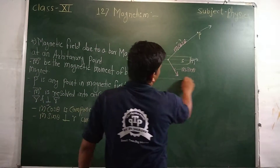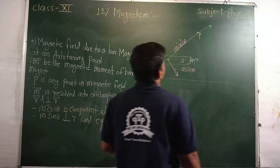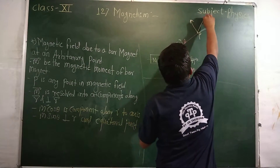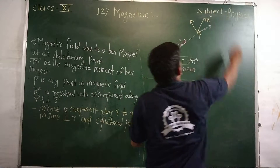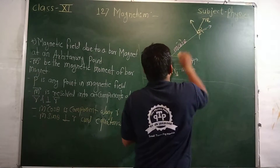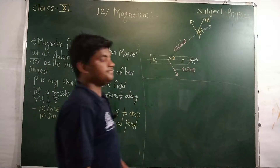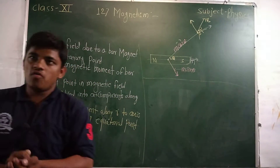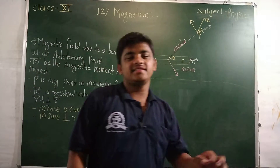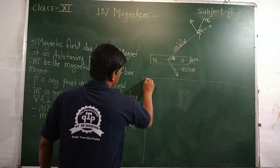Now we find the magnetic field at the point. The axial magnetic field is when the point is placed on the axis. The angle is alpha and the angle is theta. The axial magnetic field BA is found using the formula with mu zero upon 4 pi.